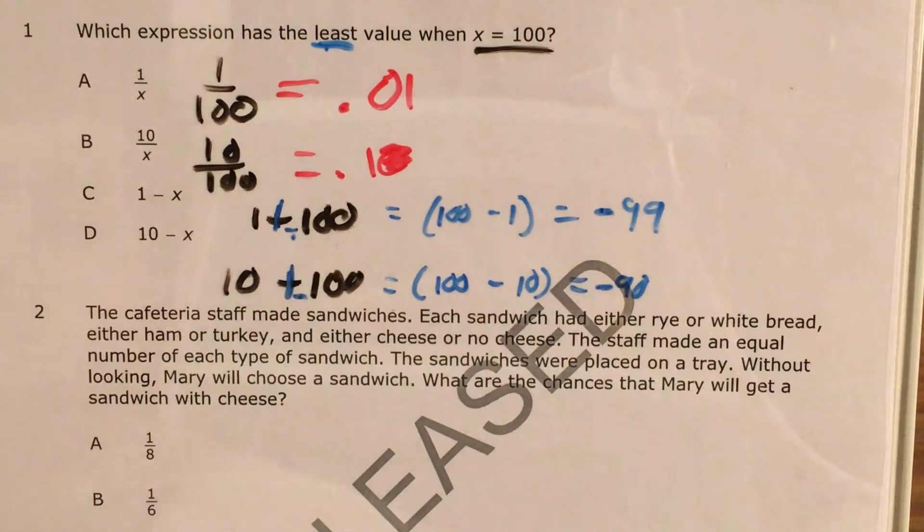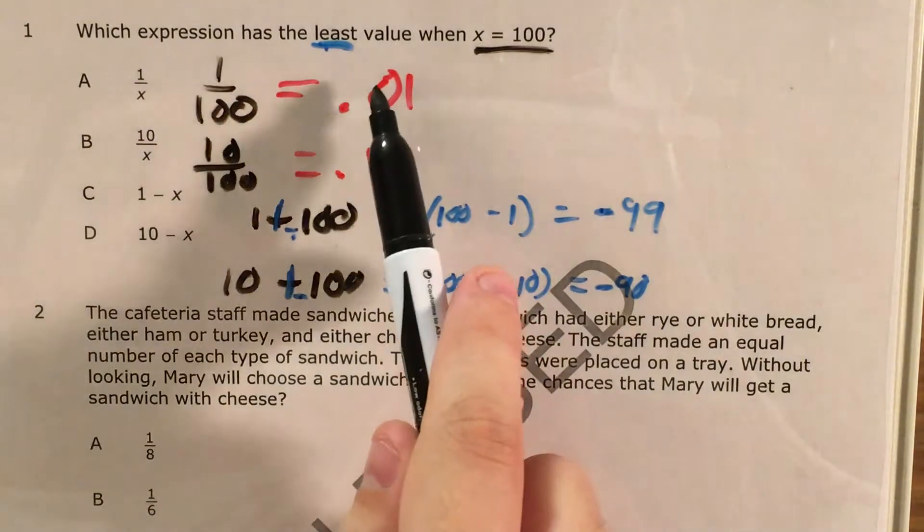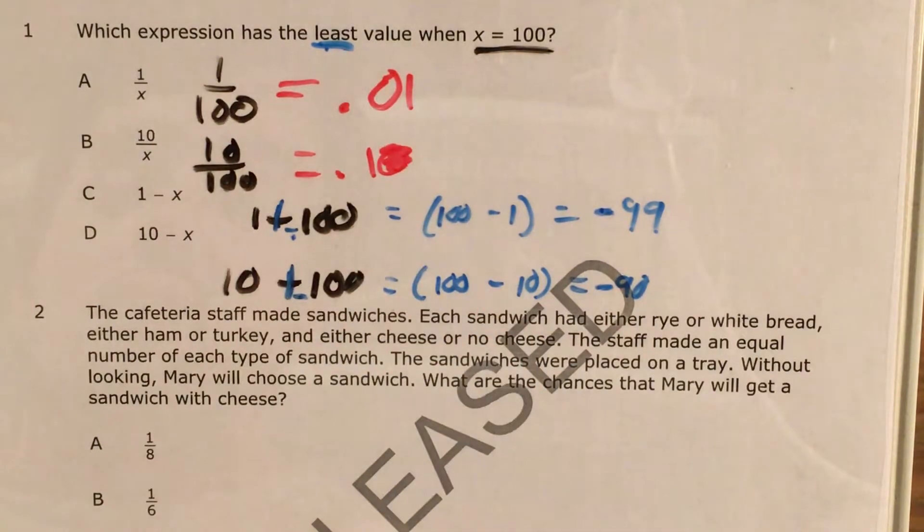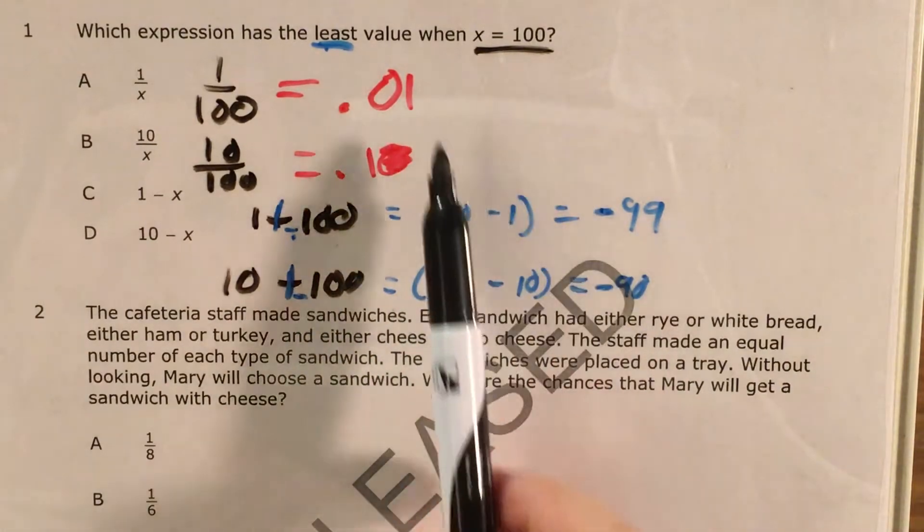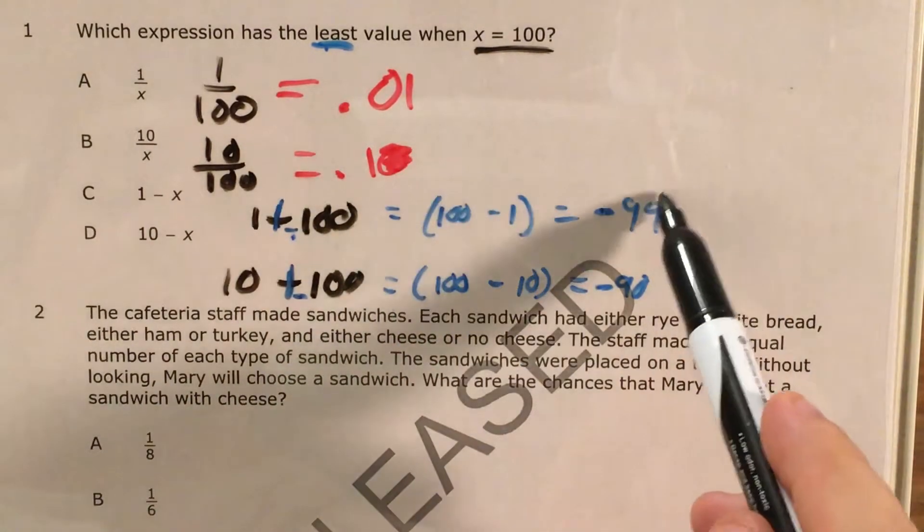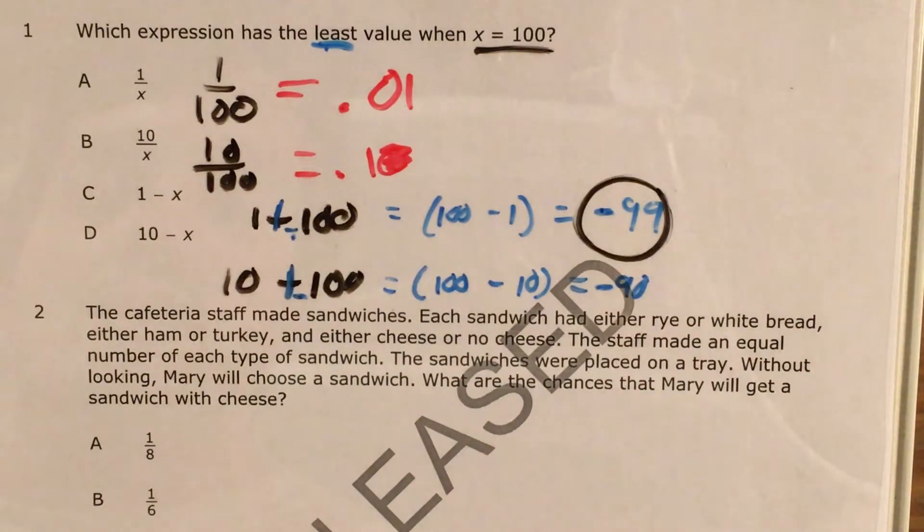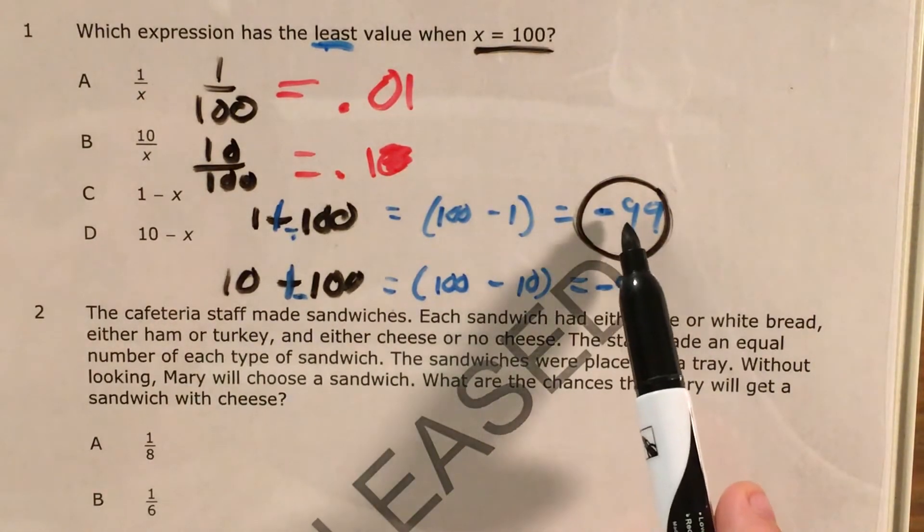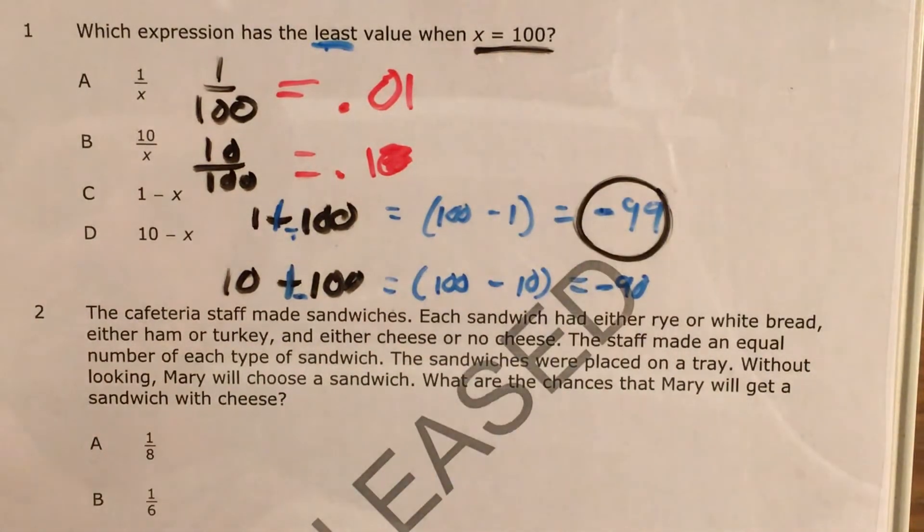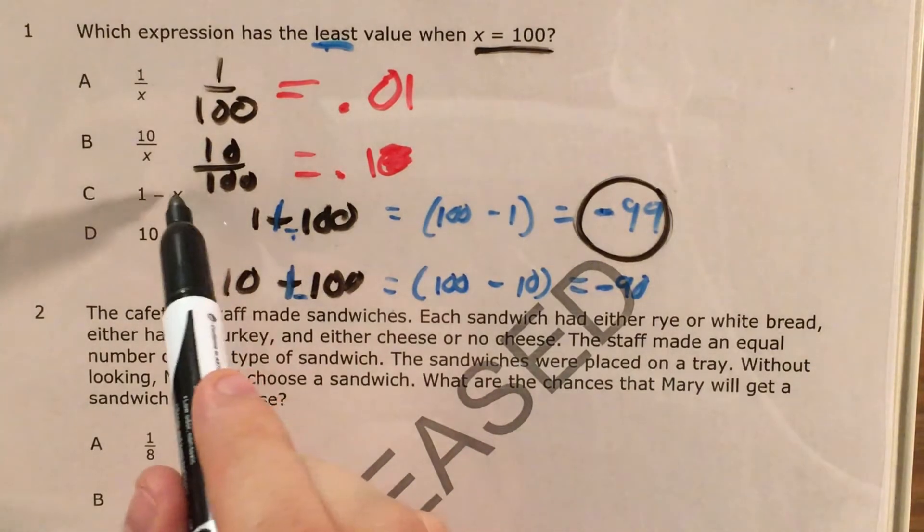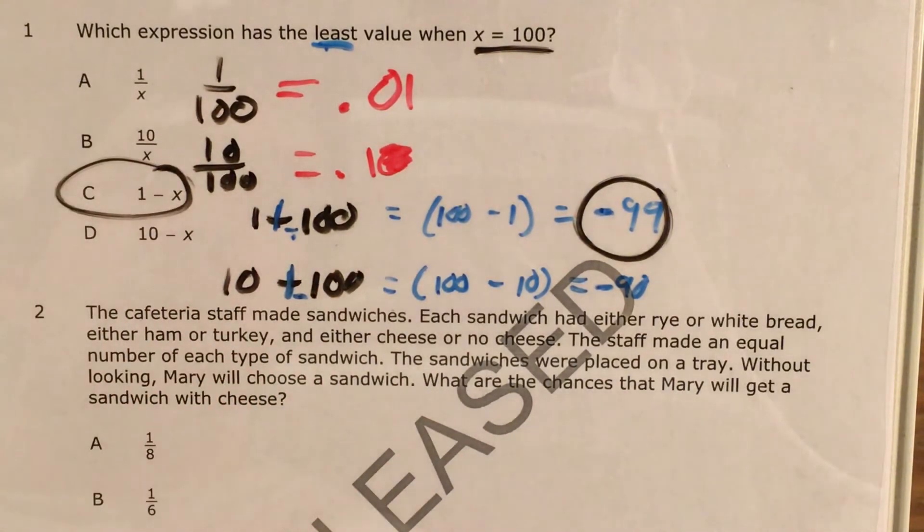So now let's compare each of these amounts and see who would have the least money if these were dollar amounts. This person would have one penny. This person would have 10 cents. This person would owe somebody $99, and this person would owe somebody $90. Now, if we think about the person who has the least money, this person has the least money because if we think of this negative sign as money they owe, they're going to have to make the most money in order to pay back somebody, so we consider that to be the least money they have right now, and that gives us choice C as an answer.